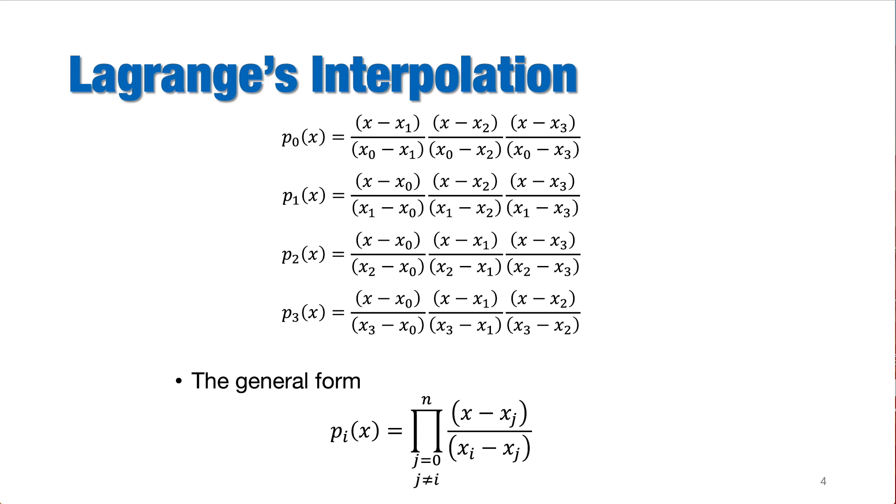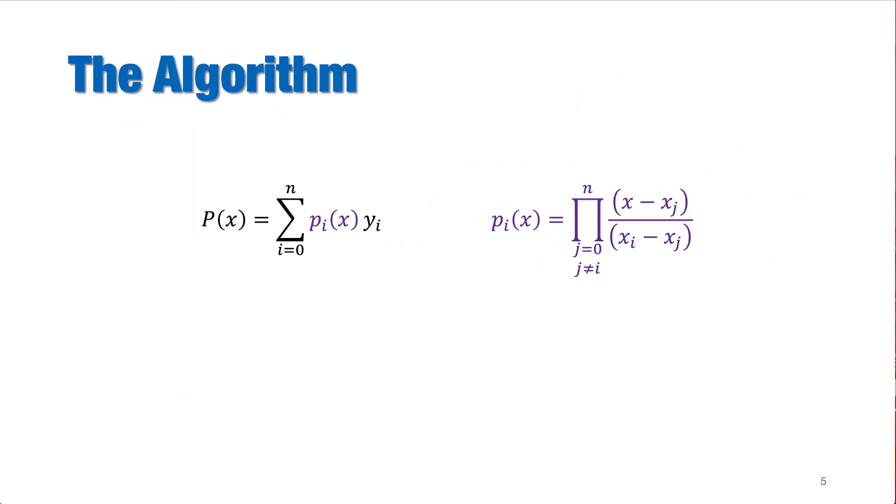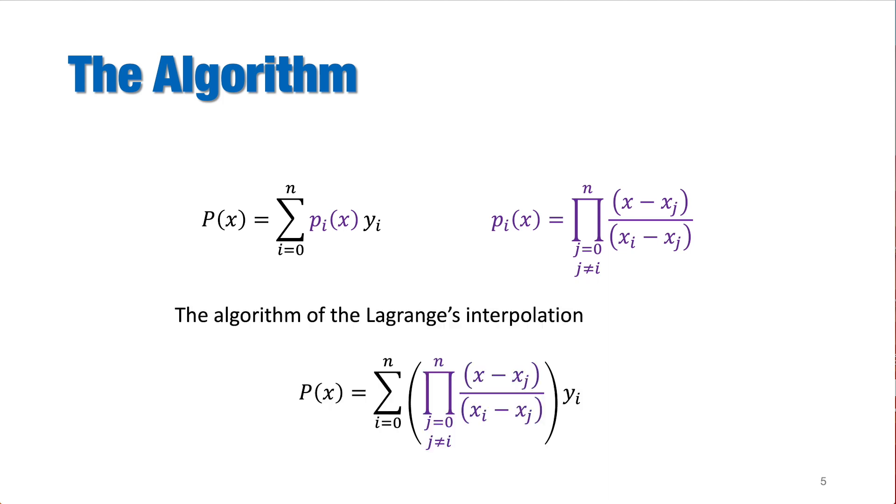That means the terms are multiplied to each other for the values of j from 0 to n, but there is a condition that j should not be equal to i. Because if j equals to i, that means we will get xj minus xj, which is 0, and that term will be divided by 0. Now, we can write the final algorithm by combining these two general formulas. So, as you see here, the outer operation is the summation of each component multiplied by the corresponding y-value, and the inner operation is the product of the x-terms. The same order will be used to create the outer and inner loops for interpolation process during the coding.